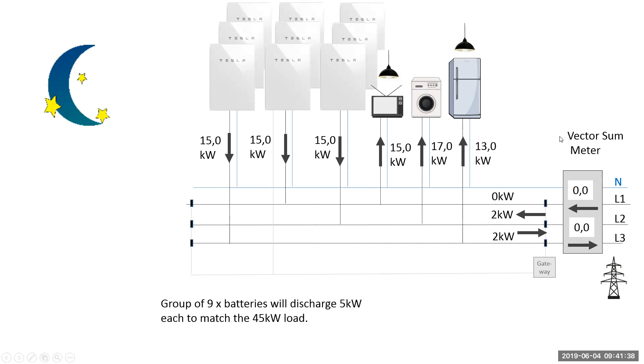All the way up to nine batteries on a three-phase system. Each battery will be passing out 15 kilowatts here because each battery can give up to five. I've made the maths nice and easy here so that we can add up 15, 17, and 13.